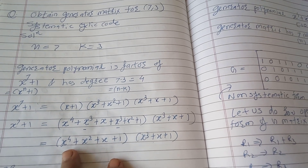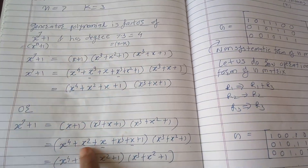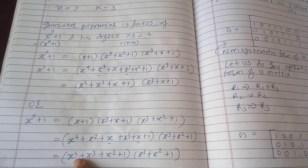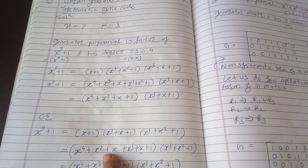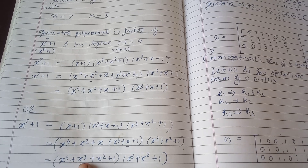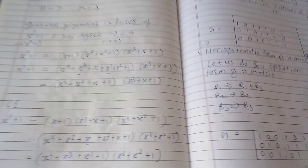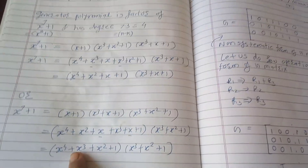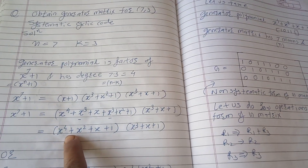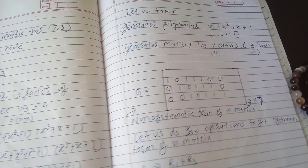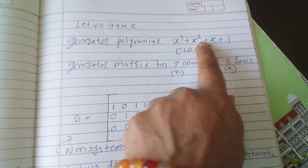This polynomial x^4 + x^2 + x + 1 has highest power 4, degree equal to 4. Alternatively, multiplying (x+1) and (x^3 + x + 1) gives x^4 + x^3 + x^2 + 1, which is another valid generator polynomial. Both can be used, but here we are using x^4 + x^2 + x + 1 as the generator polynomial.